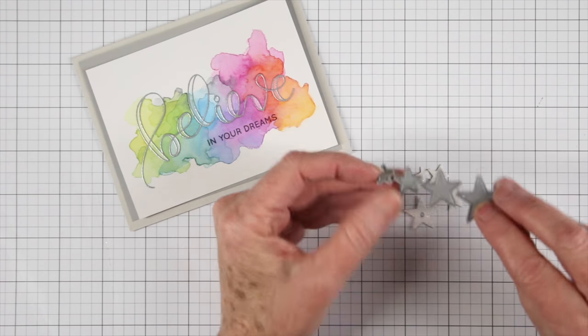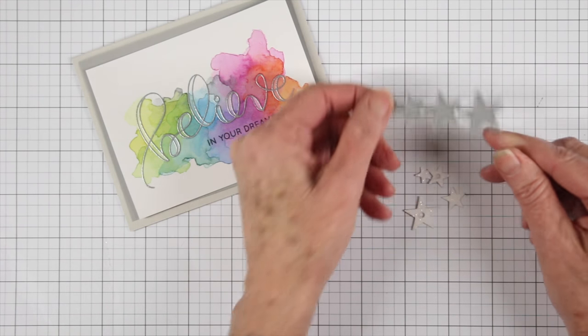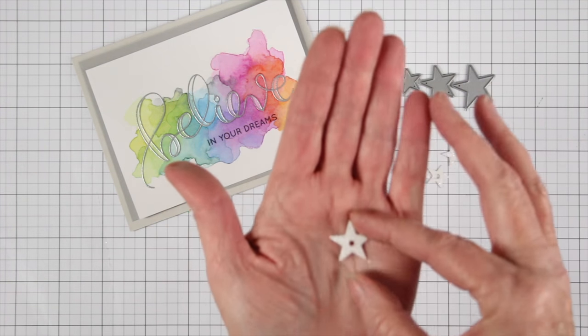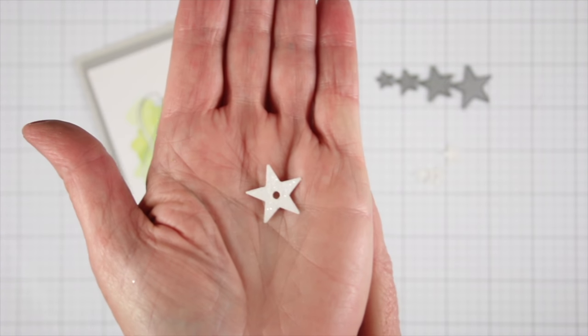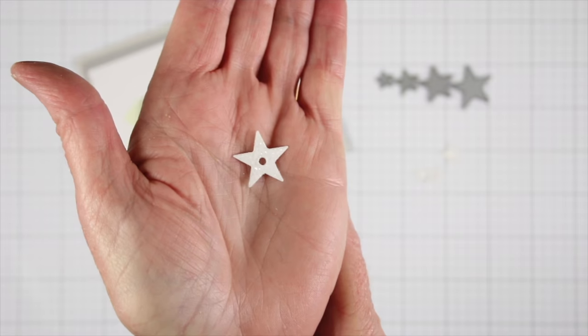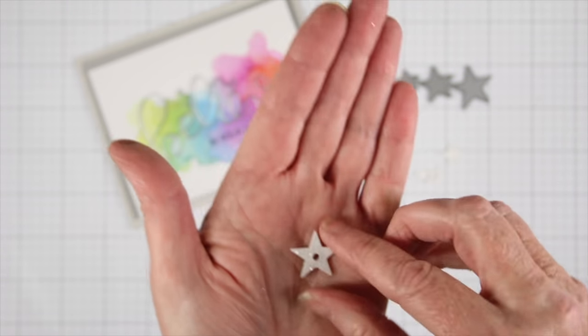I have die-cut some little stars from white paper and I've added a hole in the center to two of those so I can get a really good direct light through my card.